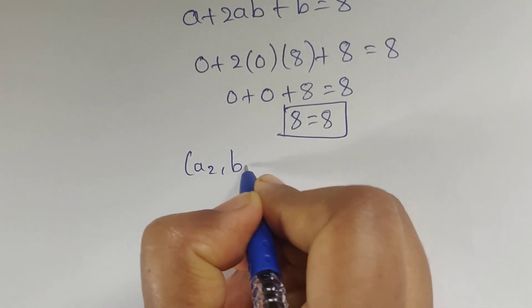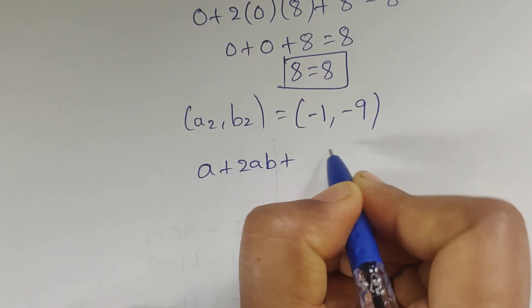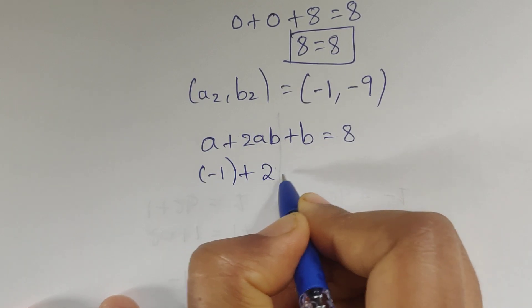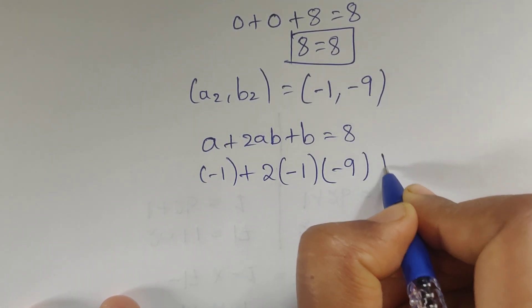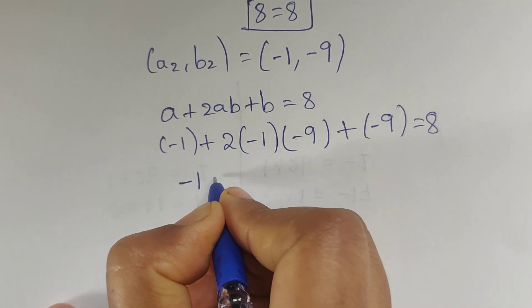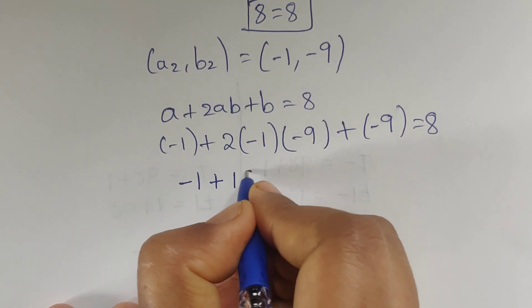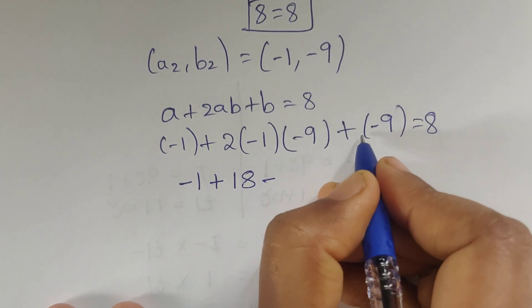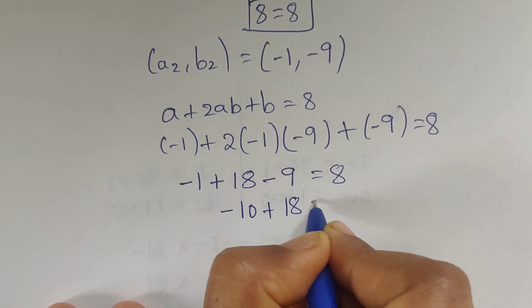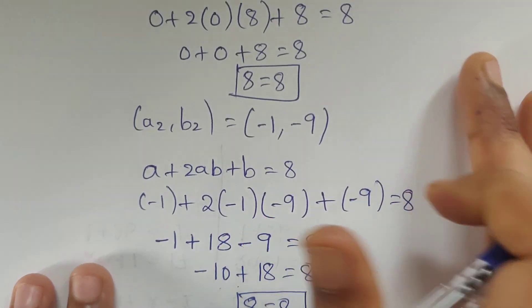Now verifying a2, b2 equals minus 1, minus 9. The equation is a plus 2ab plus b equals 8. Substituting: minus 1 plus 2 times (minus 1) times (minus 9) plus (minus 9) equals 8. So minus 1 plus 18 minus 9 equals 8, which gives minus 10 plus 18 equals 8, and 8 equals 8. So this is also true.